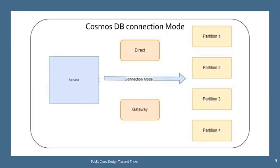Now let's understand how Cosmos DB connection modes work. Cosmos DB has two connection modes: direct connection mode and gateway connection mode. Direct connection mode is quite fast compared to gateway mode — it connects directly to your partitions, gets the data, and returns it to your service.